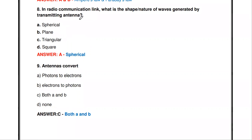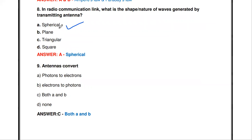The next question: in a radio communication link, what is the shape or nature of waves generated by the transmitting antenna? The answer is spherical — not plane, triangular, or square, but spherical.